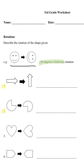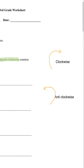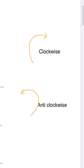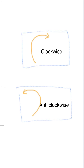For those who aren't sure what clockwise and anticlockwise is, let's revisit the concept. Clockwise is when it rotates to your right, and anticlockwise is the opposite of that, which means it rotates to your left.